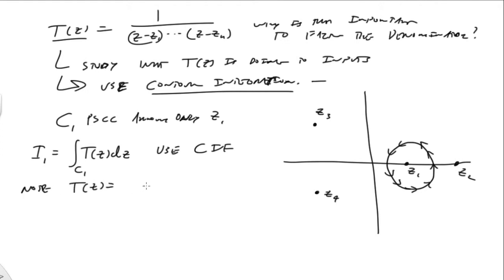So note, we have T(z). It can be written in the following form: 1 over (z - z_1) times, and I can put it completely in the numerator here. This is going to be 1 over all of our other factors, (z - z_2)(z - z_3) dot dot dot, and so on and so forth.